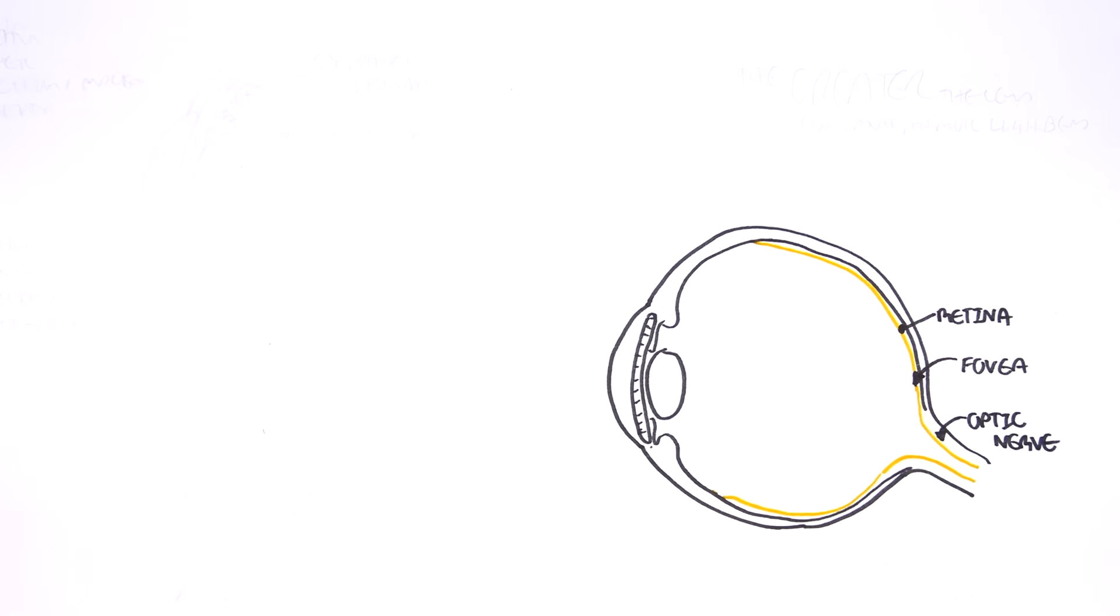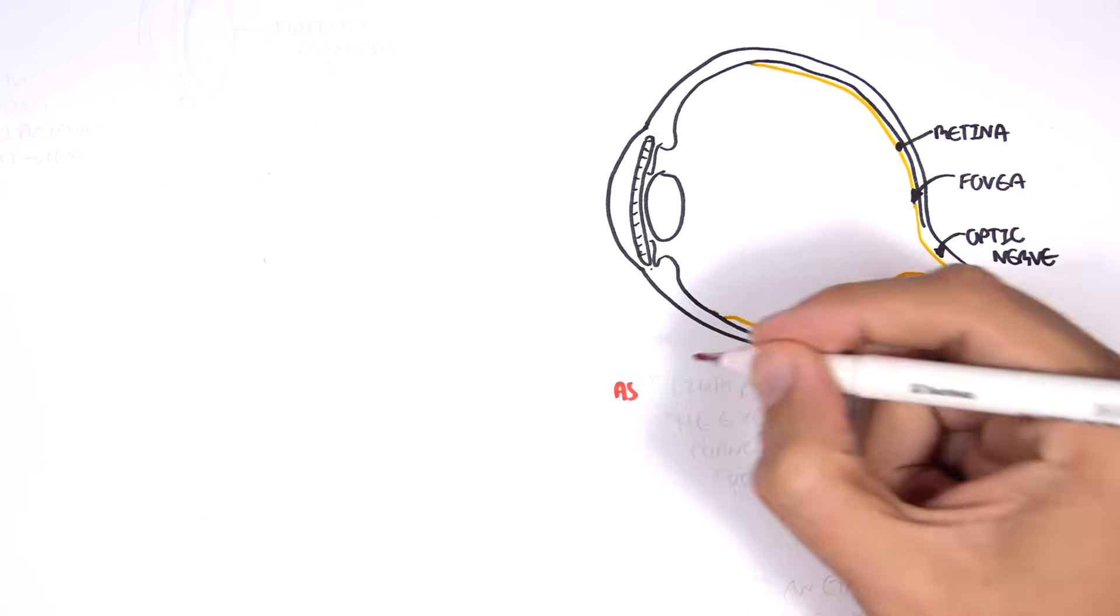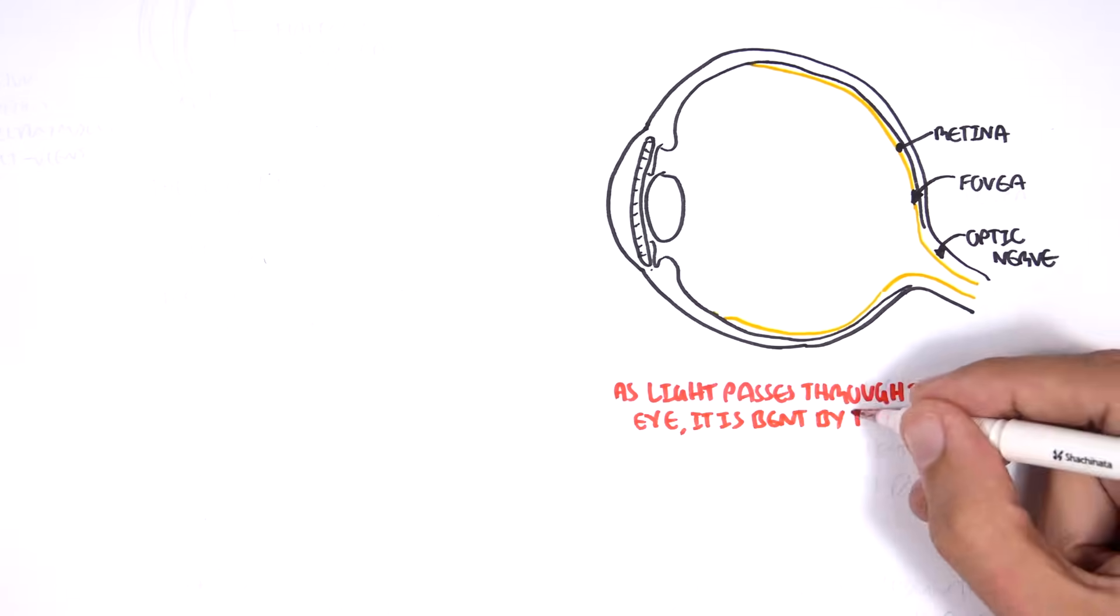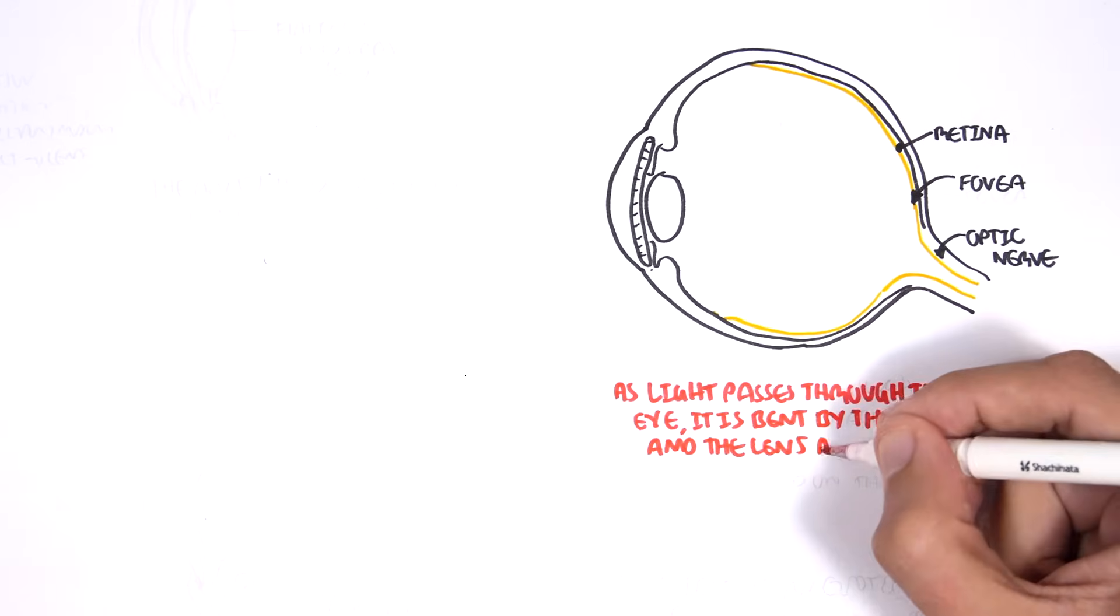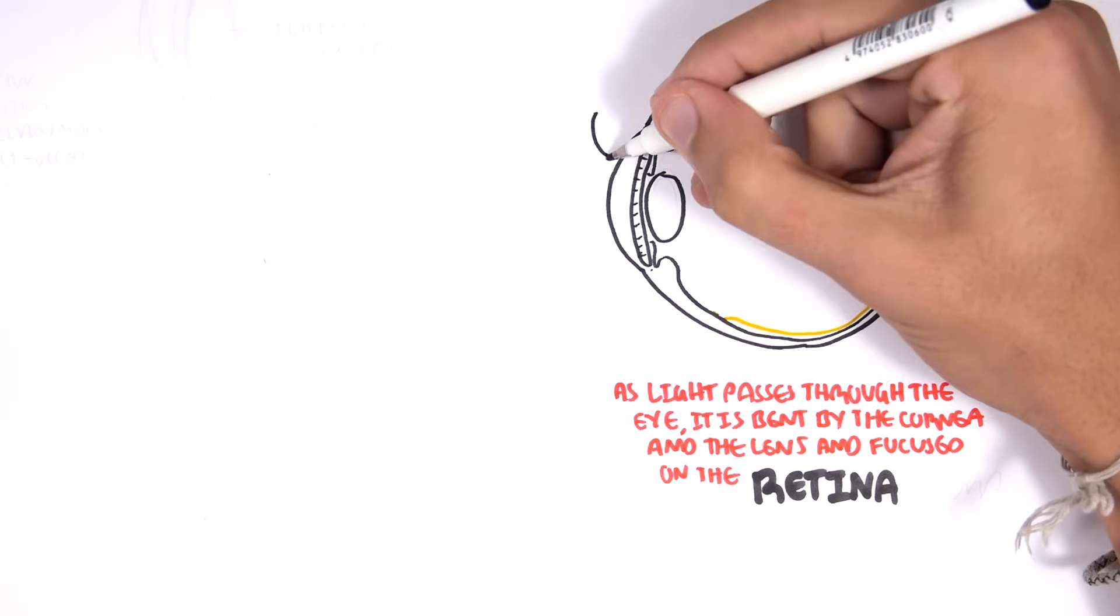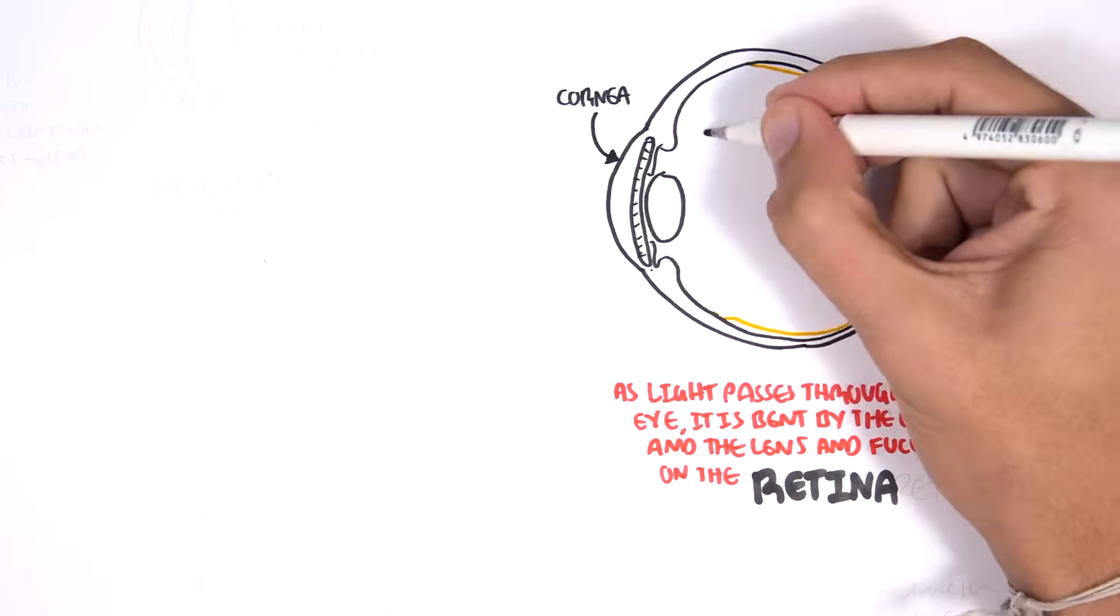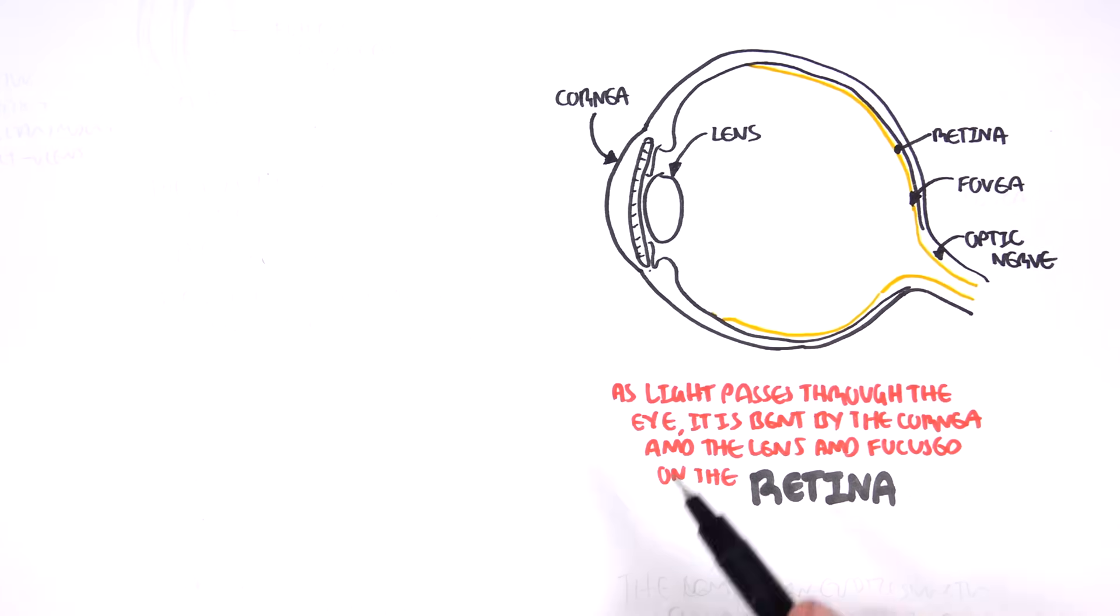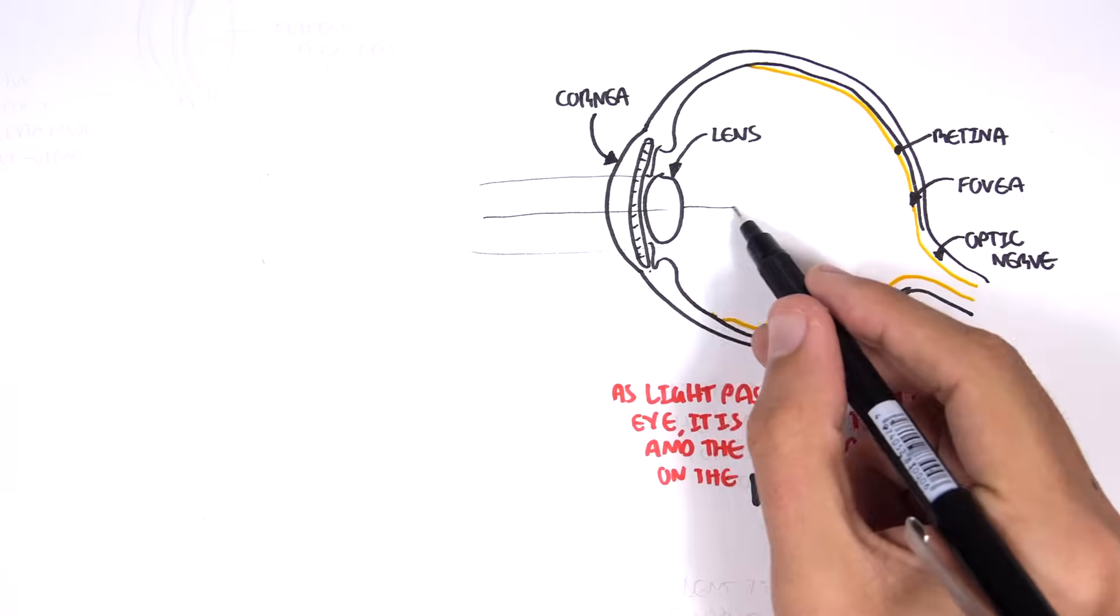The optic nerve is cranial nerve number two. As light passes through the eye, it is bent by the cornea and the lens and is focused on the retina. These are the primary structures responsible for focusing the light entering the eye, and it focuses on the fovea at the back.